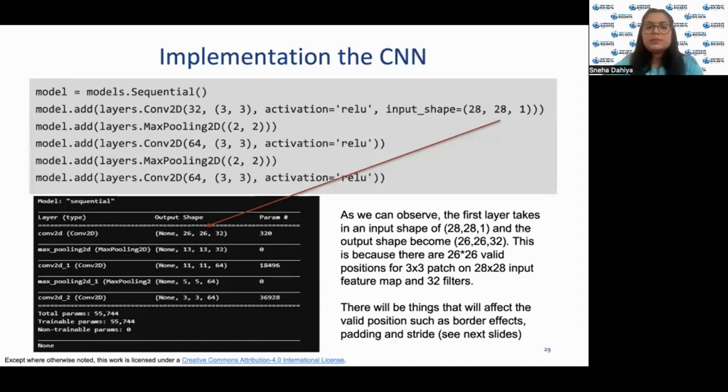Now first look at the implementation of the CNN. The implementation of CNN is shown in the following Python code. As we can observe that the first layer takes an input shape of 28 by 28 by 1 and the output shape becomes 26 by 26 by 32. This is because there are 26 by 26 valid positions for a 3 by 3 patch on a 28 by 28 input feature map and 32 filters. There will be things that will affect the valid positions such as border effects, padding and stride. It's a little bit trickier when you take border effects into account. Padding may mitigate the border effects. We'll talk about border effects and padding in next slides.